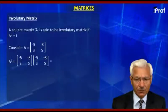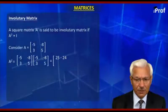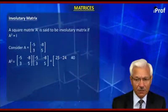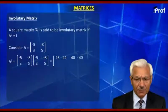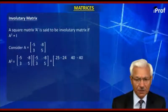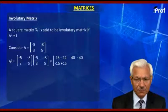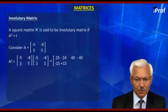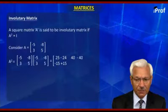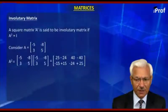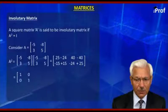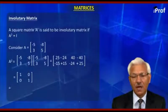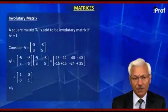The product becomes: first element 25 minus 24, second element 40 minus 40. In the second row we get -15 plus 15, and the last element becomes -24 plus 25, giving us [1, 0; 0, 1], which is the identity matrix.